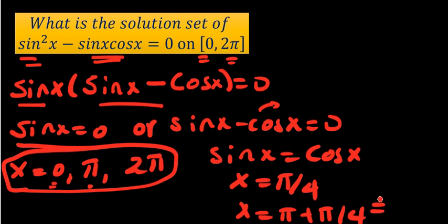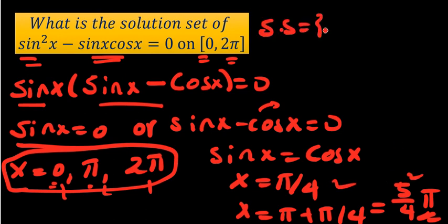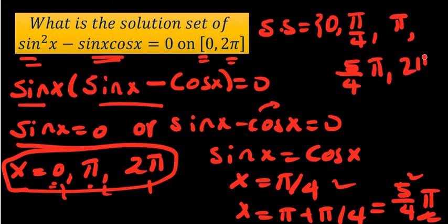So x = π + π/4, which when you add them is going to be 5π/4. So we have now around 5 answers generally. Here we have 3 answers and here 2 answers. Together, the solution set will be {0, π/4, π, 5π/4, 2π}. So we have 5 answers. This will be the final answer for the solution set of the given trigonometric equation. Thank you for watching.